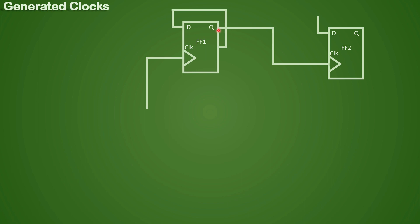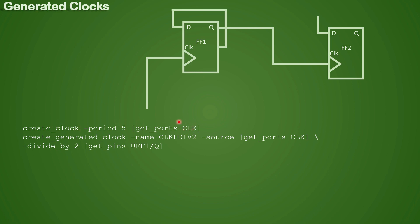The definition point of the generated clock is the output pin. The command is: first define the master clock source, then use create_generated_clock. The output pin here will give the clock name CLKPDIV2 — this is your divide-by-two clock coming from the source. UFF1 is the instance and its output pin becomes the starting point for the generated clock. This definition is needed because the STA engine does not know that the clock period has changed at the output of this divide-by-two logic, and the new period must also be defined.